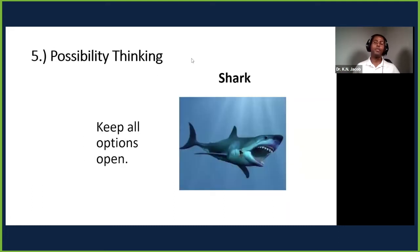Number five: possibility thinking, using the shark. The shark opens its mouth wide, ready to bite whoever comes its way. Possibility thinkers keep all their options open. The business may start as a restaurant, but then they add hair products, jewelry at the cashier, M-pesa, mobile banking—they're open to it, so long as it makes money.